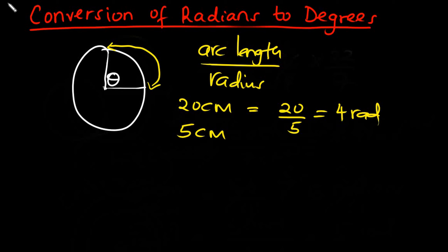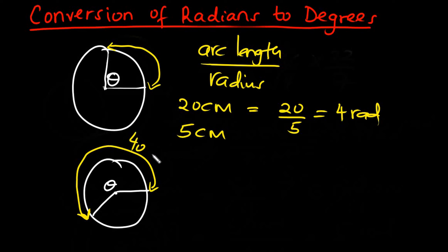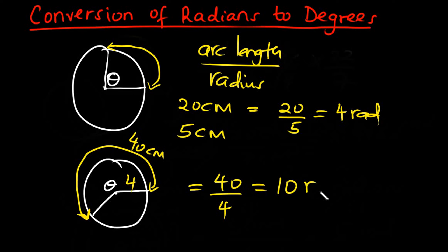Let's have another circle. This time let's make the arc bigger, and let's have that as theta. The arc length is going to be the distance from this point all the way to that point. So let's say it is 40 cm and the radius is 4 cm. So the angle theta in radians is going to be 40 cm divided by 4 — that is the arc length divided by the radius — and it is going to be 10 radians.